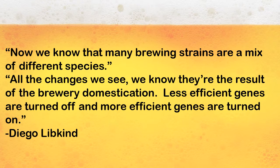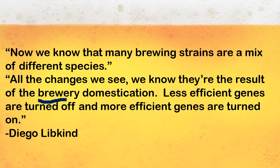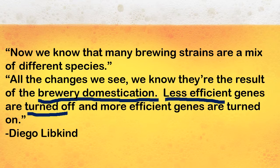Diego Lipkin, who researches in this area, says that many brewing strains are a mix of different species. That's why, depending on the yeast you choose, you get a little bit different result. Part of that is because of something called brewery domestication — because we are using these yeasts in the same way over and over again, they basically learn. The genes that are less efficient wind up being turned off, and the genes that are more efficient wind up getting turned on. Sounds like evolution.